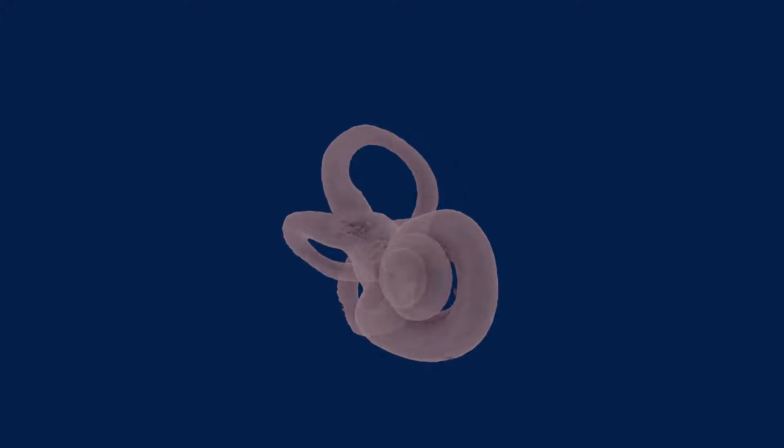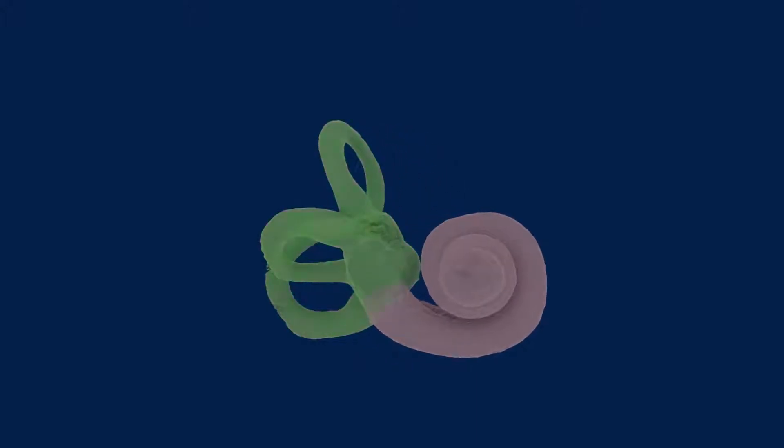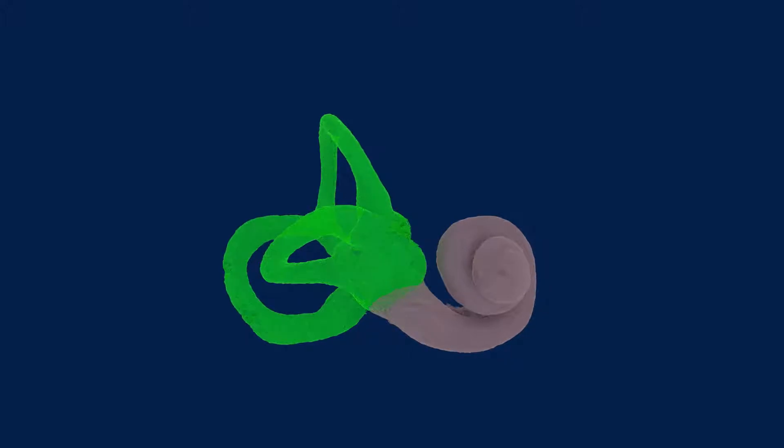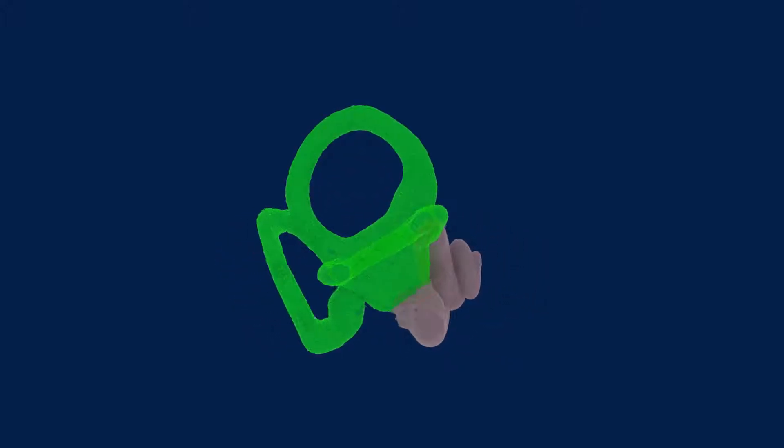The vestibular system is located in the inner ear and is one of the critical sensory systems that lets us move around the world safely and be able to see things clearly as we move around.